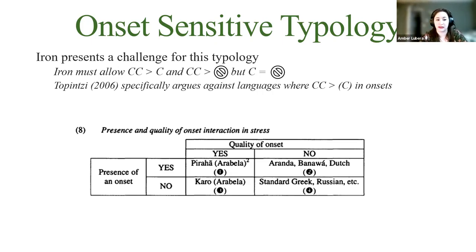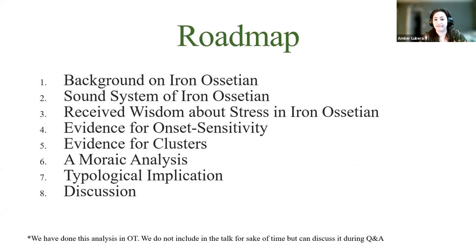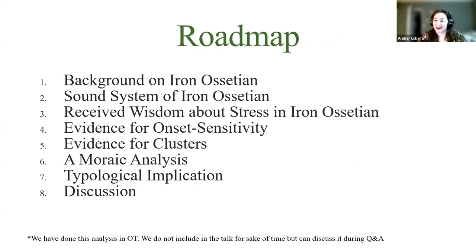Tpency's 2006 dissertation charts languages where onset presence contributes weight, like Karo or Alabella, and languages where onset quality provides weight, like Pirahã, and languages sensitive to both. Iron is a problem for this typology because it requires two consonants to provide weight and be heavier than one consonant, while one consonant equals zero consonants in terms of weight — a configuration Tpency specifically argues against.